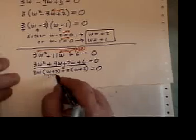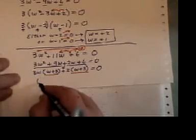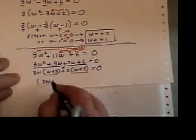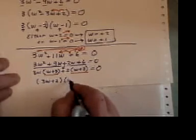Now at this point, we have two absolutely even brackets, w plus 3. So we can factor it into 3w plus 2 and w plus 3 equals 0.